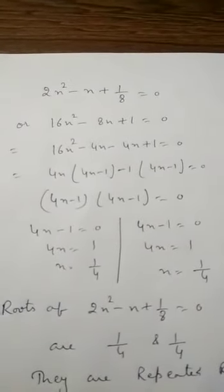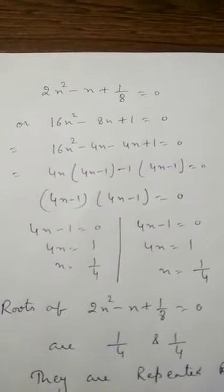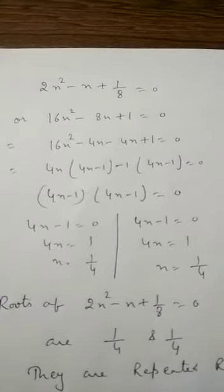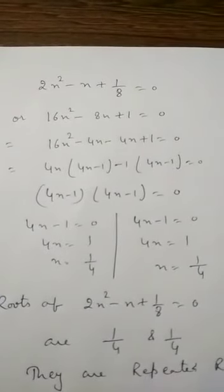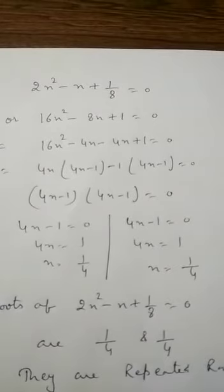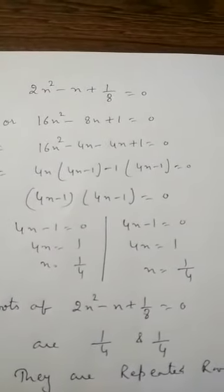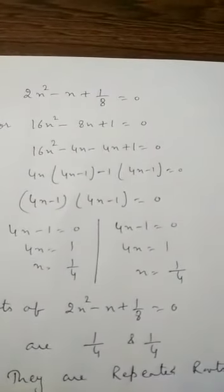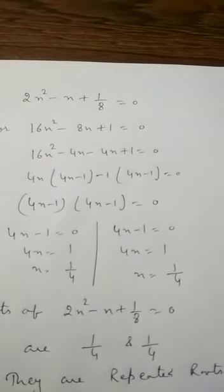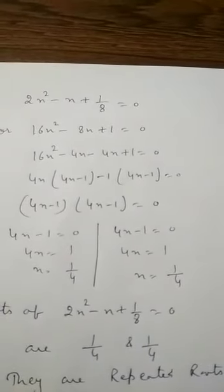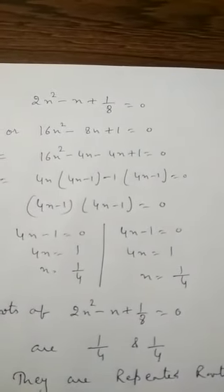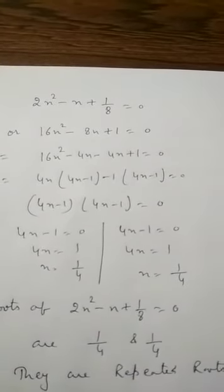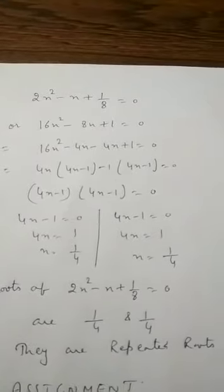Let's take the next question. I have the quadratic equation 2x squared minus x plus 1 by 8 is equal to 0. First, we take the LCM to simplify it. After taking the LCM, we get 16x squared minus 8x plus 1 is equal to 0. Then split the middle term: 16x squared minus 4x minus 4x plus 1 is equal to 0. This is factorized as 4x minus 1 into 4x minus 1 is equal to 0. When 4x minus 1 is equal to 0, x is equal to 1 by 4, and we can see both roots are equal.